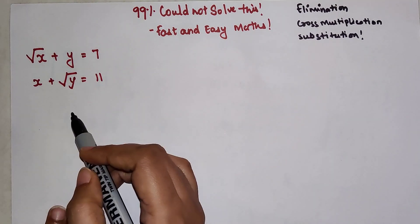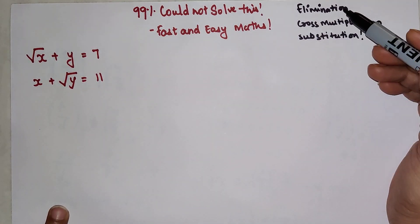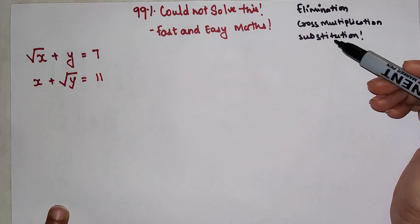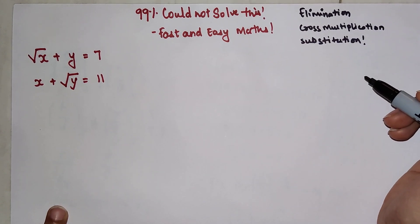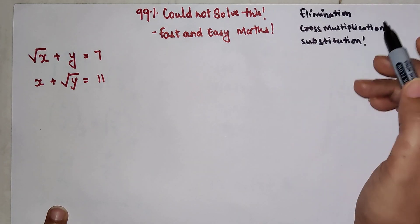This looks very similar to a simultaneous equation. We can use these three methods which were taught in standard 10: elimination, cross multiplication, and substitution.